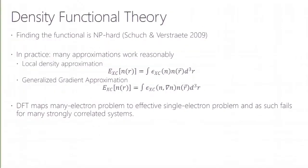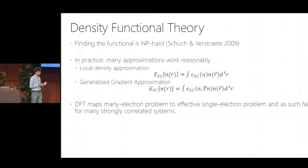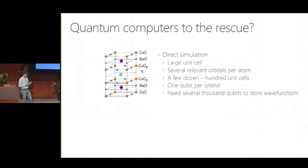While we know such a functional exists and you can in principle compute the ground state energy as a function only of the density, in practice we don't know how to do that computation. The reason people care about DFT is that there are many approximations that work reasonably well in practice — things like the local density approximation or the generalized gradient approximation. But you should think of this as mapping the many-electron problem to an effective non-interacting problem in some more complicated potential. It fails when correlation effects and entanglement between electrons are crucial for the physics, and fails completely to predict high-temperature superconductivity.